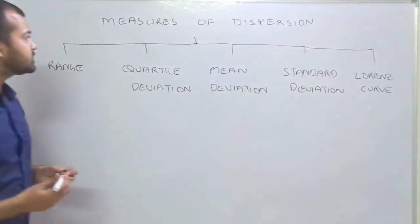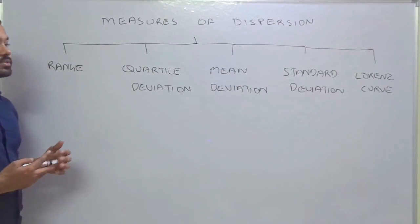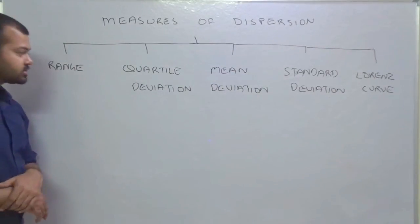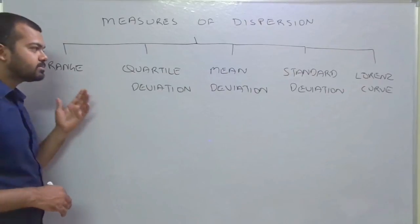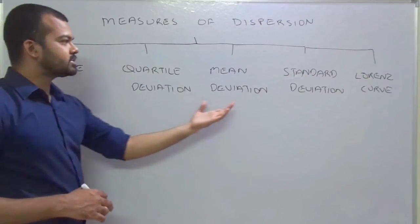These are the five methods which we are using in order to calculate the dispersion. First one is range, very simple. Second one is quartile deviation, mean deviation, standard deviation, and Lorenz curve.